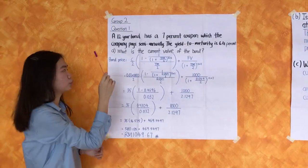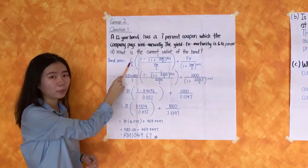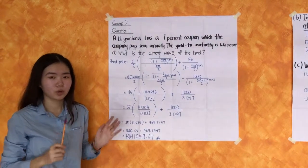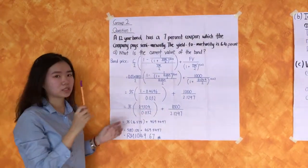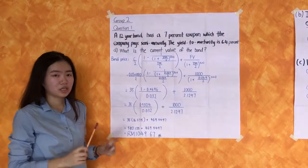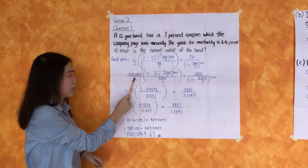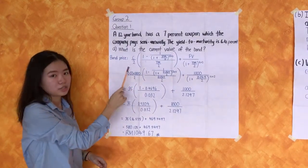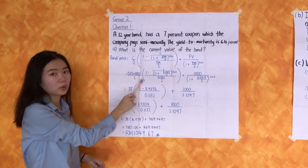Since we don't know how much is the annual coupon payment C, we use the coupon rate formula to find the annual coupon payment. The annual coupon payment C is the coupon rate times the face value divided by 2, which is 0.07 times 1000 divided by 2.